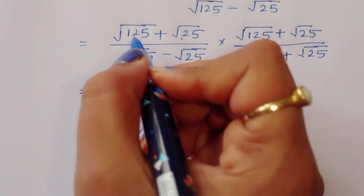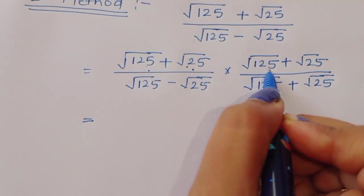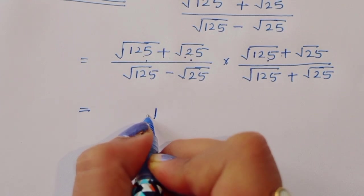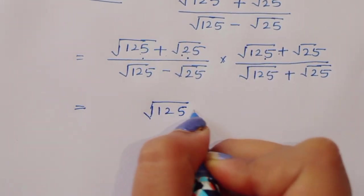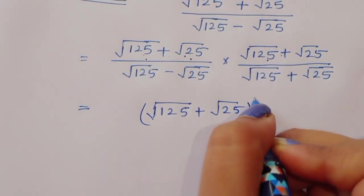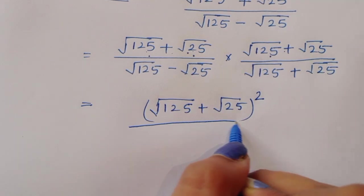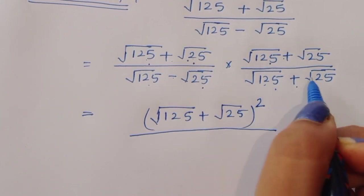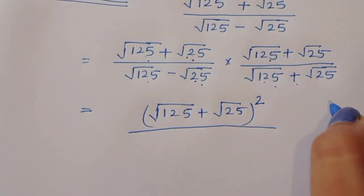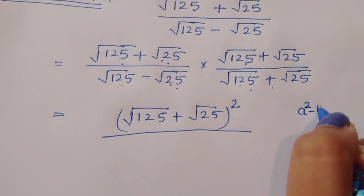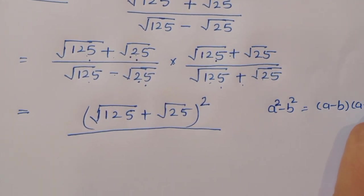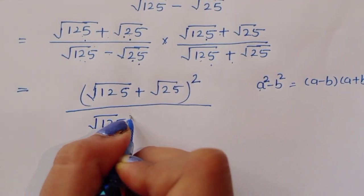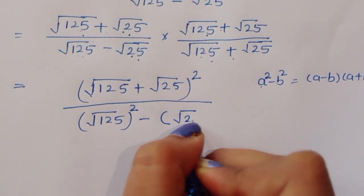The denominator is of the form a minus b times a plus b. We know the formula a square minus b square equals a minus b times a plus b. So in the denominator, a square is square root of 125 squared, and b square is square root of 25 squared, giving us 125 minus 25.